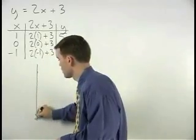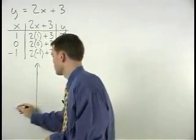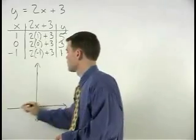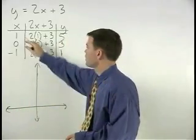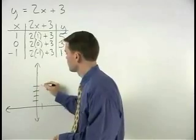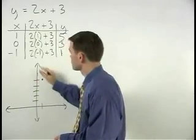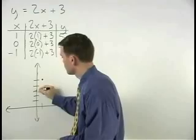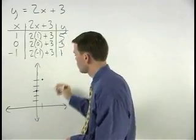So setting up our coordinate system, we have 1, 5, 0, 3, and negative 1, 1.